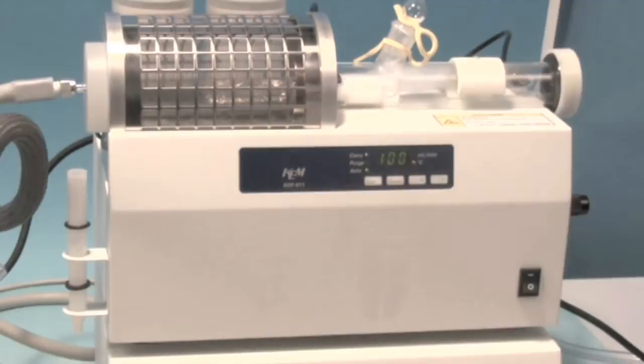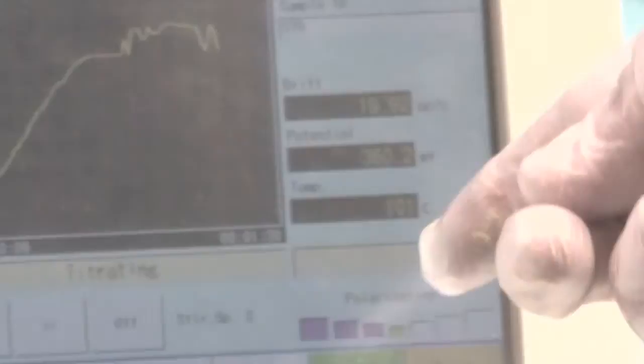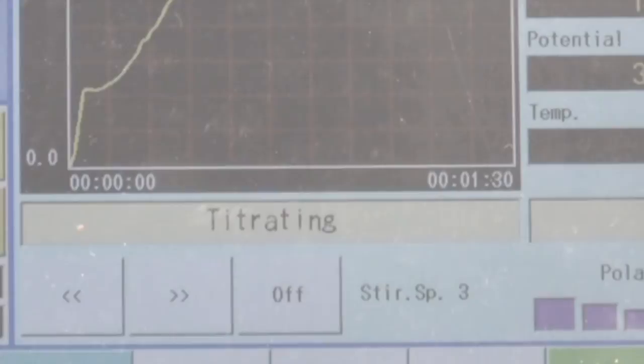We're going to be really interested to see what these results look like. When this test finishes it's going to prompt us to put the sample weight in. We'll simply come up to the master control unit and we'll input the sample weight and we will hit OK and we're done. The test result will print and we'll be ready to run our next test.